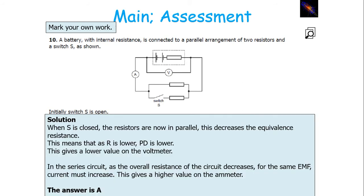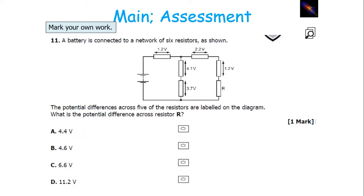When S is closed, the resistors are now in parallel, so the equivalent resistance is now lower. As R is lower, PD is going to be lower, because resistance is directly proportional to the potential difference of the circuit, giving a lower value on the voltmeter. In the series circuit, the equivalent resistance has gone down with the same EMF, which means you'll have a higher value on your ammeter because the current has gone up.